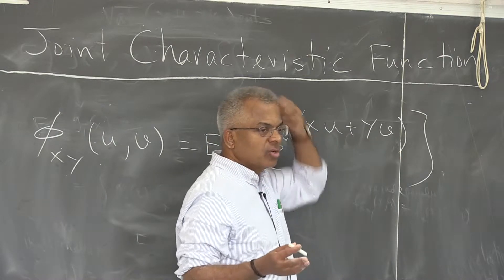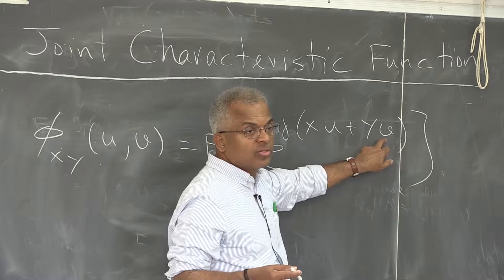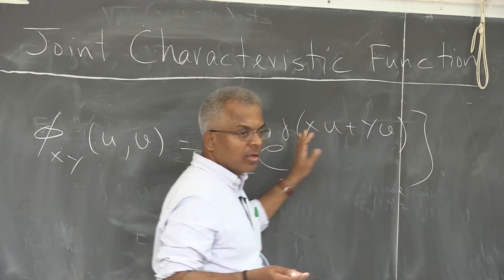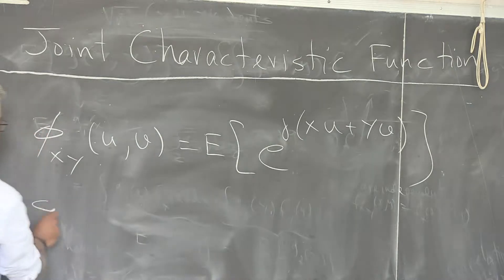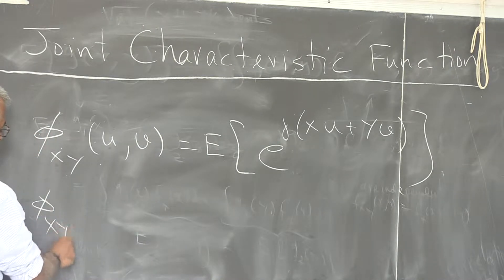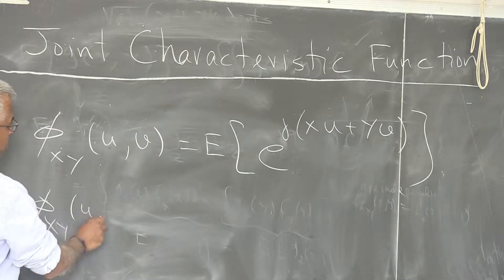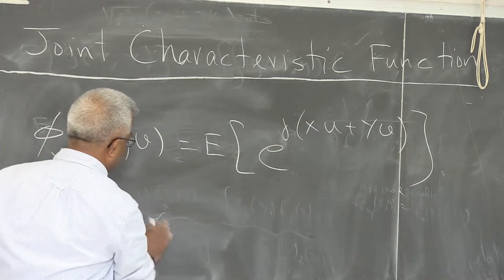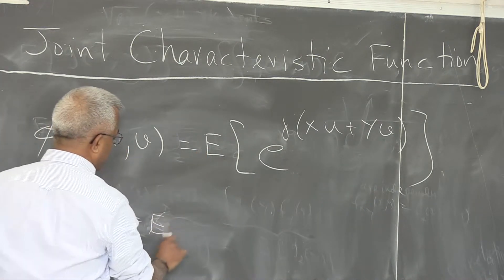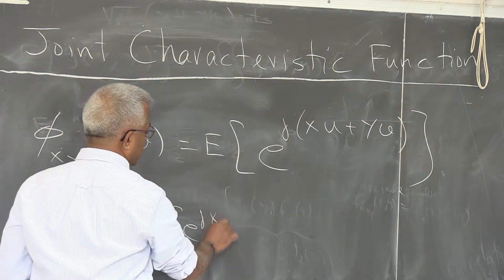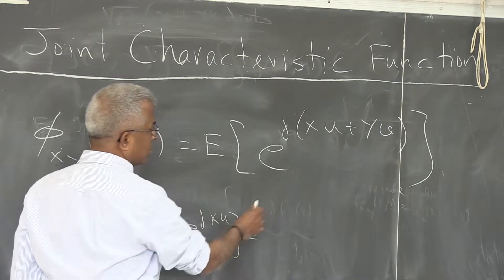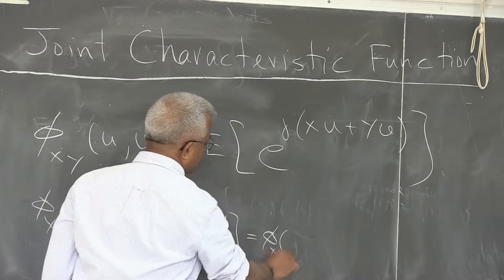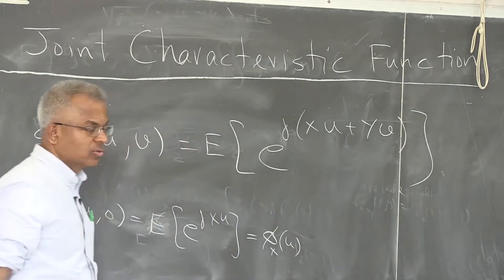The first observation is that if you put v equal to 0 in the characteristic function, what do you get? You get the expected value of e raised to j·x·u. This is just the characteristic function of X evaluated at u.